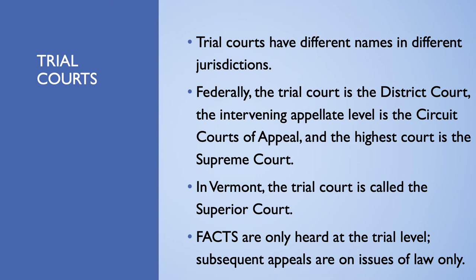In the federal courts, the intervening appellate level court is called the Circuit Courts of Appeal, and the highest court is the U.S. Supreme Court. In Vermont, we call our trial courts the Superior Court. That's kind of funny because they're not superior to anything. There used to be two different types of trial courts in Vermont: district courts for smaller matters and Superior Court for larger matters like felony cases or civil trials over a certain dollar amount. A couple of years ago they simplified the Vermont court system and all trial courts are now called the Superior Court. Facts are only heard at the trial level; any subsequent appeals are on issues of law only.